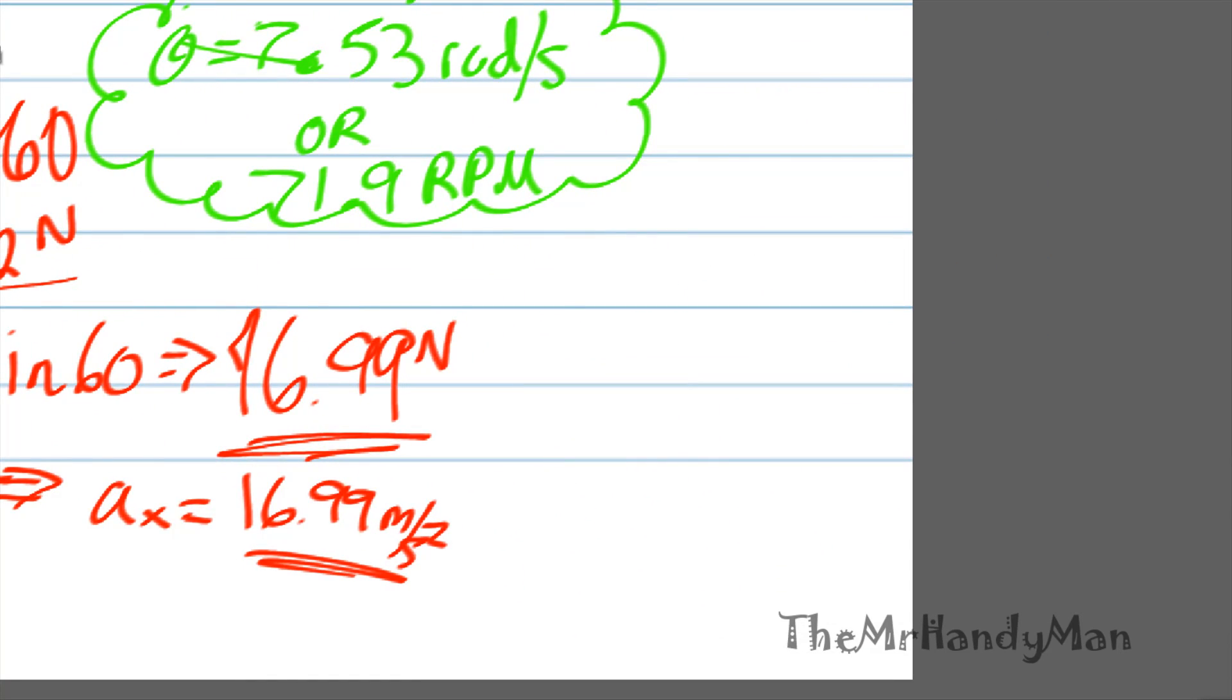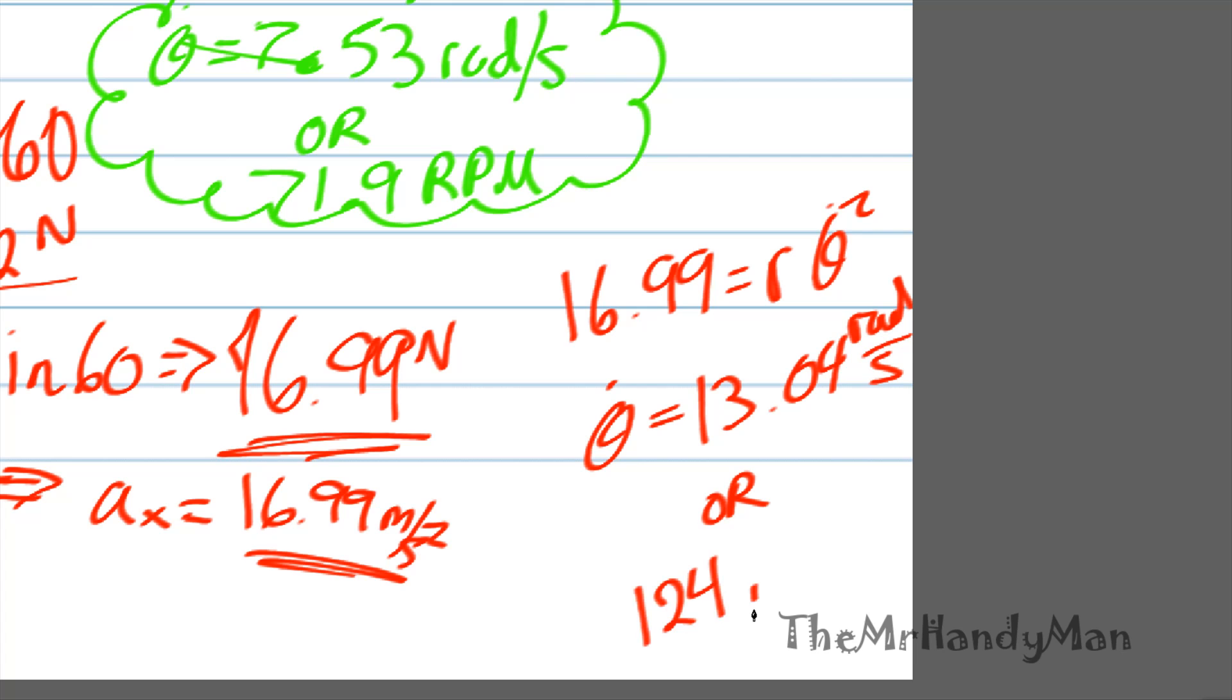When we use that, we have 16.99 equals R theta squared, theta dot squared. Solving that for us, theta dot equals 13.04 radians per second or 124 RPM.